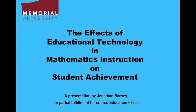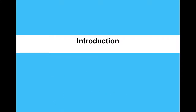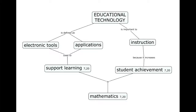The following is an analytical review of the literature on the effect of educational technology in mathematics instruction on student achievement, presented by Jonathan Barnes. Educational technology is defined as the various electronic tools and applications used to support the delivery of mathematics instruction with the goal of improving student achievement. These technologies may include computer-assisted instruction, computer-based algebra systems, computer-based interventions, and interactive whiteboards.